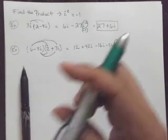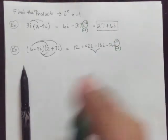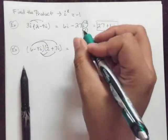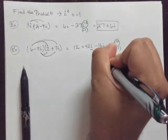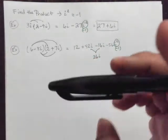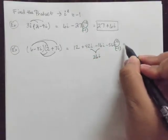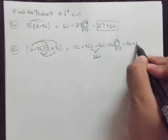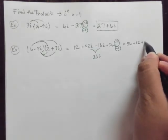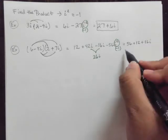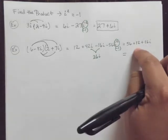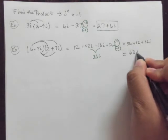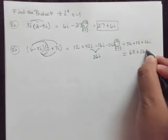And we can also combine these terms, 42 and negative 16i, that gives us 26i. So we're going to keep that in mind right there. So we end up with negative and negative, positive 56, plus 12, plus 26i. And when we clean that up, 56 plus 12 is 68 plus 26i.